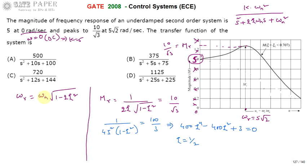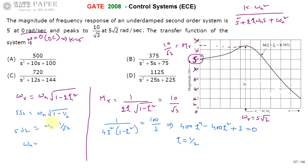Using zeta equal to 1/2 in the omega_r equation: omega_r equals 5 root 2, and (1 minus 2 times 1/4) equals 1/2, so this becomes omega_n times 1 by root 2. Therefore 5 root 2 equals omega_n divided by root 2, giving omega_n equal to 5 root 2 times root 2, which is 5 times 2, equal to 10 radians per second.